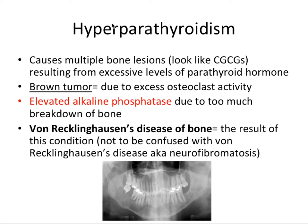Next we have hyperparathyroidism, which is an endocrine disorder that causes multiple bone lesions that look like CGCGs, resulting from excessive levels of parathyroid hormone. The most important term to remember for the board exam is brown tumor — the actual lesion you can see in the radiograph — which is due to excess osteoclast activity resorbing bone and leaving radiolucent lesions. Elevated alkaline phosphatase is an enzyme involved with the bone apposition-resorption pathway, elevated here due to too much bone breakdown from excess osteoclast activity driven by excessive parathyroid hormone levels.